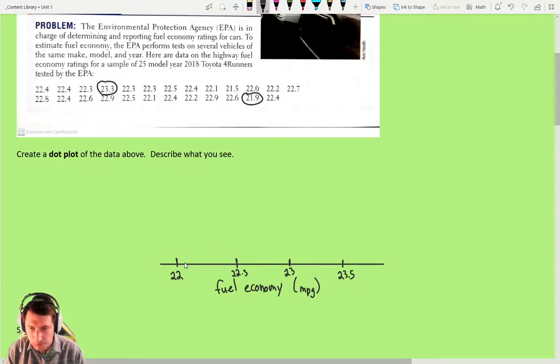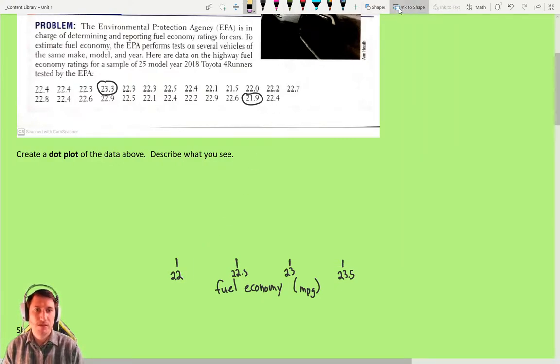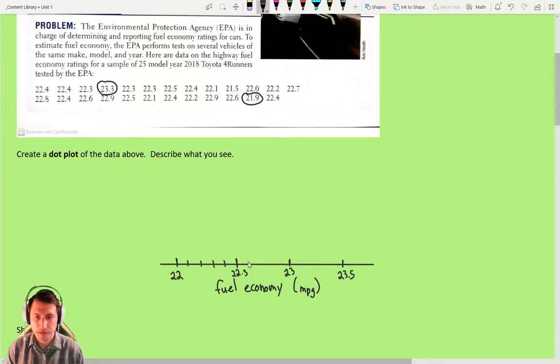And then I can just put marks in between for 22.1, 22.2... We'll just redraw the shape here. So 22.1, 2, 3, 4, 5, then 1, 2, 3, 4, 5, then 1, 2, 3, 4, 5, etc. We are going to need one over here because the smallest one is 21.9.